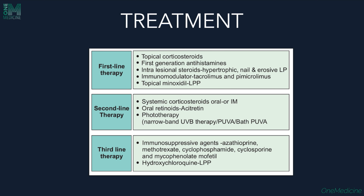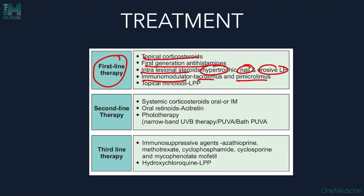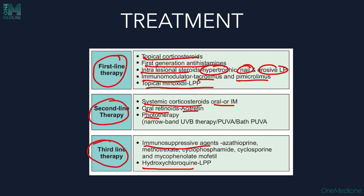Treatment of Lichen Planus: first-line therapy includes topical corticosteroids and first-generation antihistaminics for itching. Intralesional steroids can be given in hypertrophic LP, nail LP, and erosive LP. Immunomodulators like tacrolimus, pimecrolimus, and topical minoxidil are used in lichen planopilaris. Second-line therapy includes systemic corticosteroids (oral and intramuscular), oral retinoids (acitretin), and phototherapy (narrow-band UVB, PUVA or bath PUVA). Third-line therapy involves immunosuppressive agents like azathioprine, methotrexate, cyclophosphamide, cyclosporine, and mycophenolate mofetil. Hydroxychloroquine can be given in lichen planopilaris.